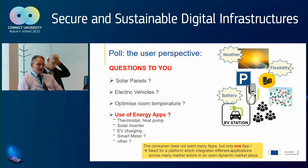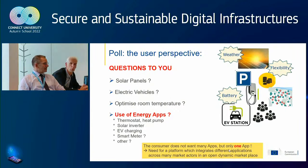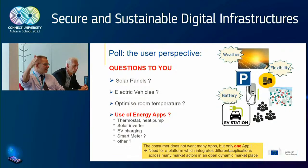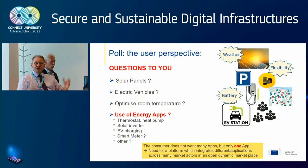Do you have solar panels, an electric vehicle, do you optimize your room temperature at home? And do you use different apps — thermostats, heat pumps, solar inverters, EV charging, smart readers? While you answer that, one key conclusion I can draw from discussions with consumers: the consumer does not want five, six, seven, or eight different apps to control features in electricity — they all have to work together. The consumer needs a platform which integrates different applications across many market actors in an open, dynamic marketplace.